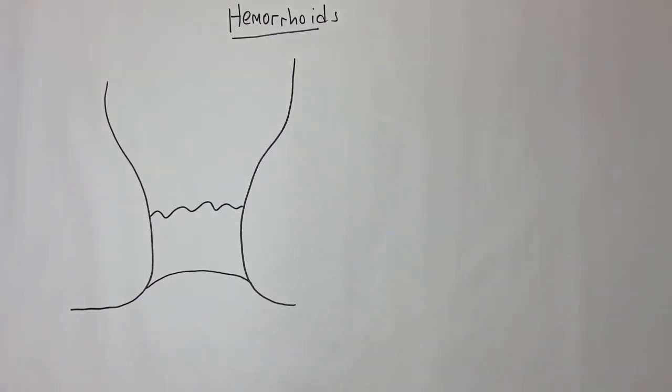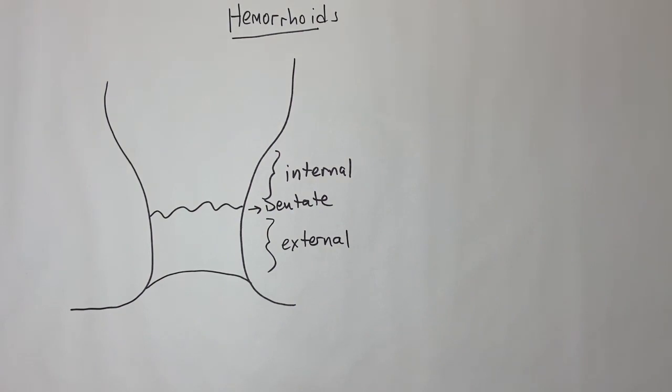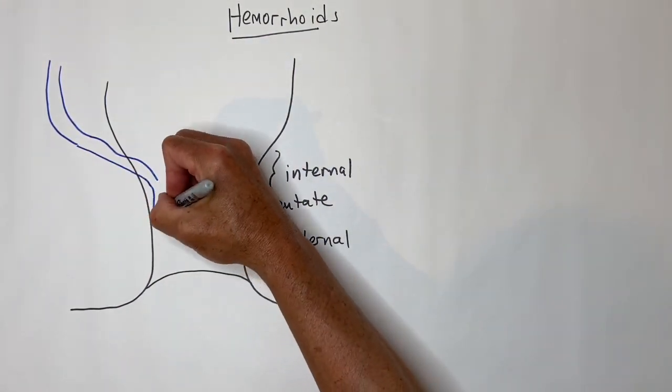Hemorrhoids are classified as internal, which are above the dentate line, and external, below the dentate line. Internal hemorrhoids are painless and are the ones prone to bleeding.